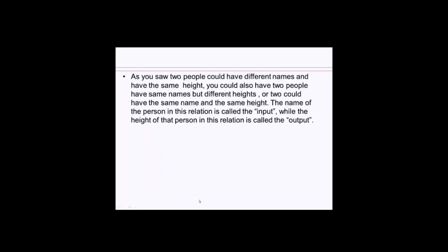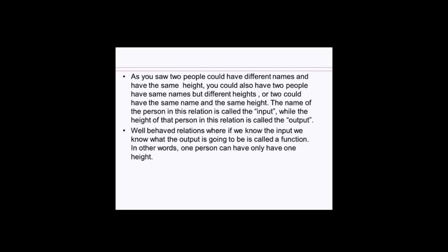As you see, two people could have different names but can share the same number for their heights. Or you could also have two people with the same name but who are completely different heights, or you can also have two people who have the same name and the same height. The name of the person in this relation is called the input or the domain, while the height of that person in this relation is called the output or the range.